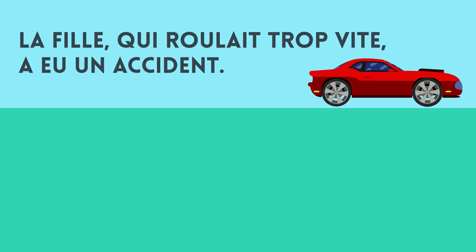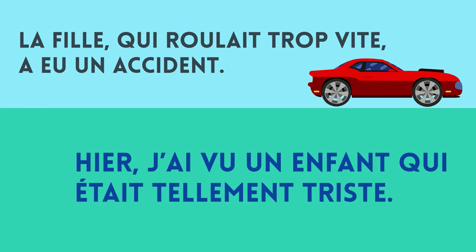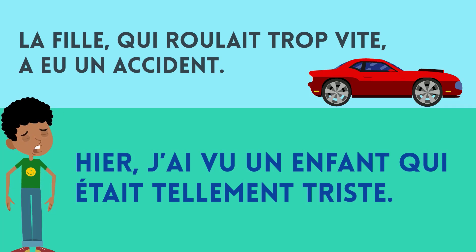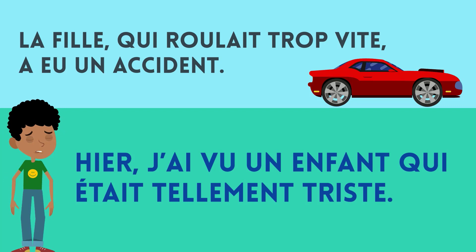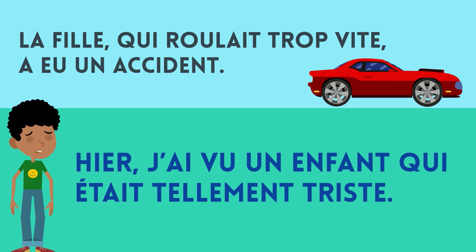Bakın yine aynı kız bir de kaza geçiriyor. Yani bu kız hem çok hızlı sürüyor, hem kaza geçiriyor; her ikisi de aynı kıza atıfta bulunuyor. 'A eu un accident' — avoir un accident, passé composé'de iki tane avoir fiilini görüyorsunuz. Şimdi bir örnek daha: 'Hier j'ai vu un enfant qui était tellement triste.' Dün diyor; bir zaman belirtecimiz var. J'ai vu gördüğümüz zaman geçmişte olduğunu anlayacağız. Dün bir çocuk gördüm. Bu çocuk nasılmış? 'Qui était tellement triste' — son derece üzgün bir çocuk gördüm.